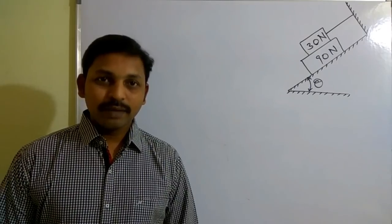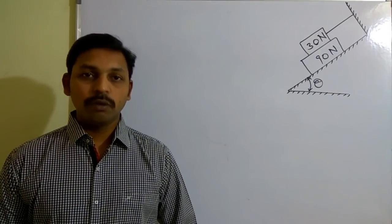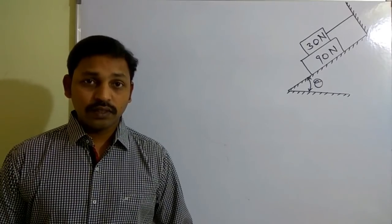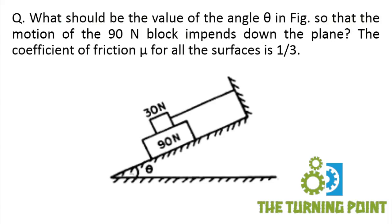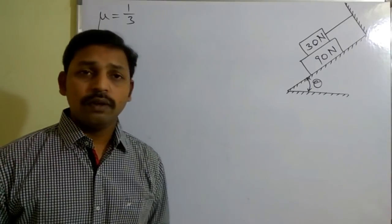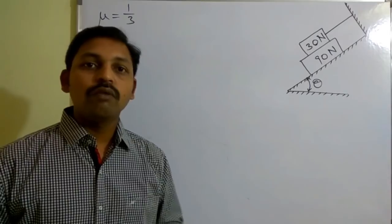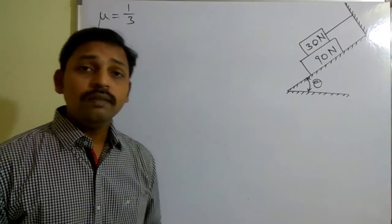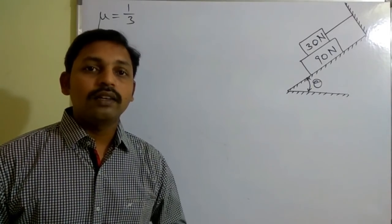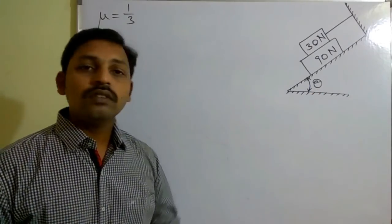Hello everyone, welcome to the Turning Point. In this session let us solve a problem on friction. The question is: given that the 90 Newton block has impending motion downwards and the coefficient of friction is equal to 1/3, you are supposed to calculate the angle theta.